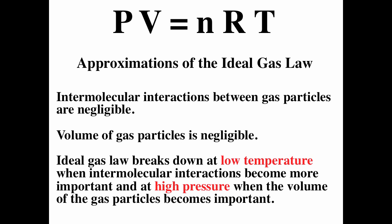The ideal gas law, PV equals nRT, has two approximations: intermolecular interactions of the gas particles are negligible, and the volume of the gas particles themselves is negligible.